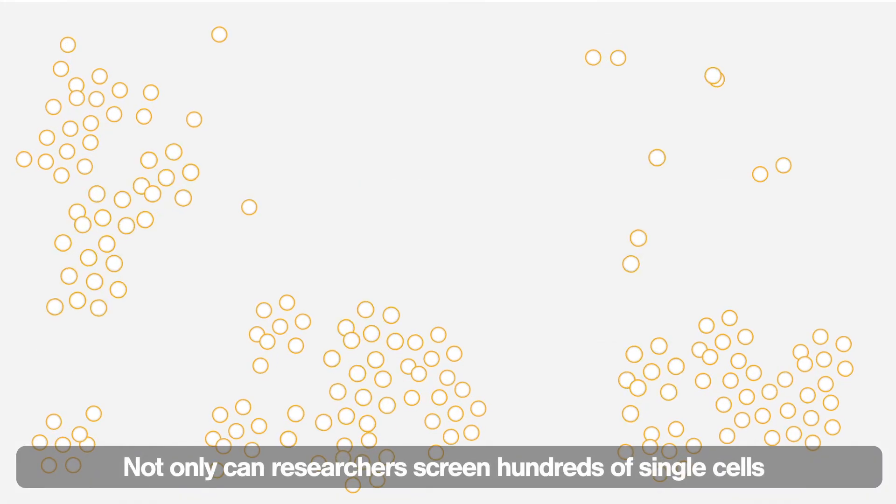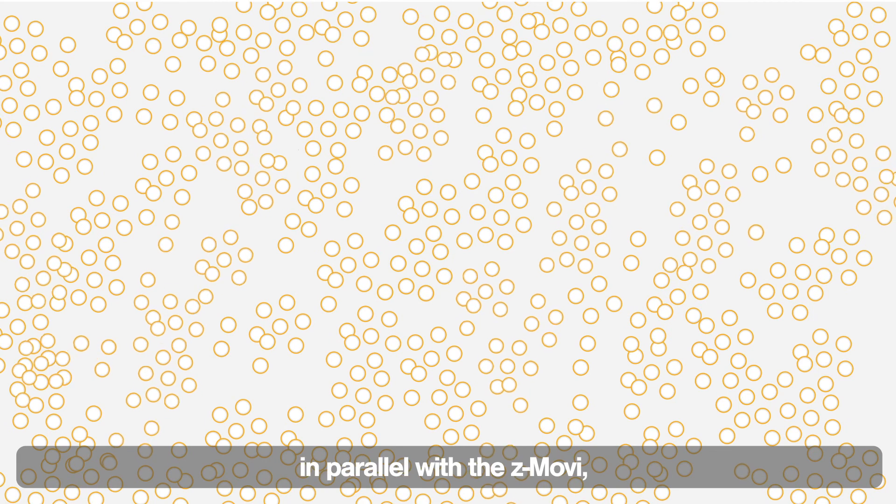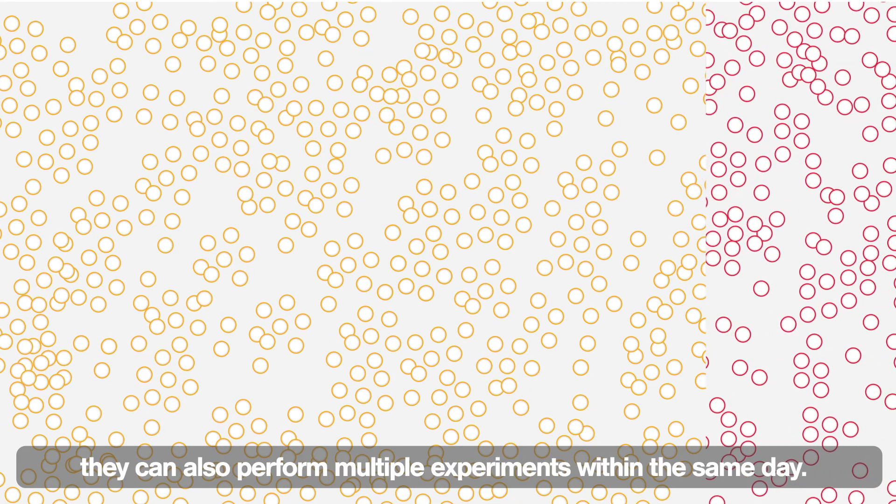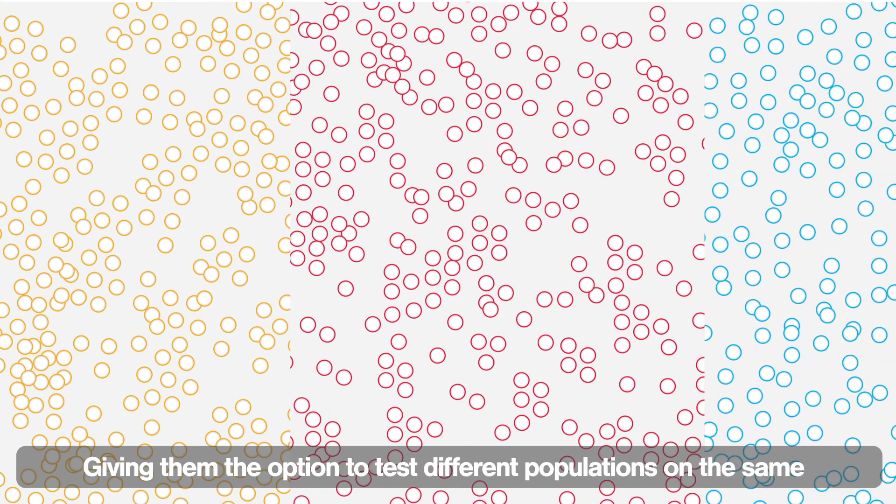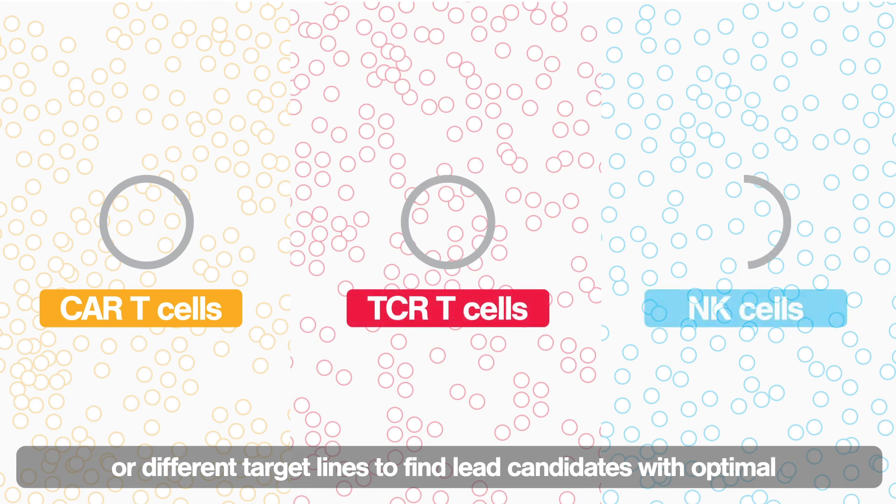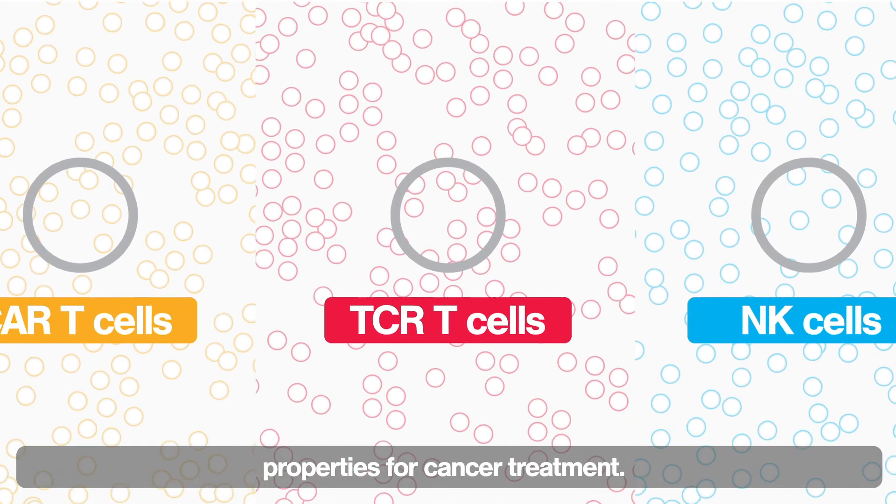Not only can researchers screen hundreds of single cells in parallel with the z-Movi, they can also perform multiple experiments within the same day, giving them the option to test different populations on the same or different target lines to find lead candidates with optimal properties for cancer treatment.